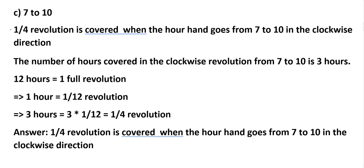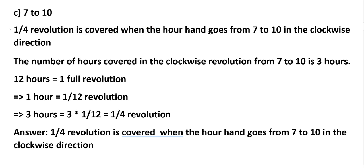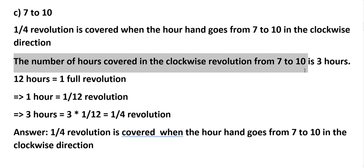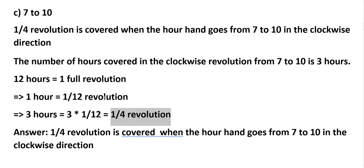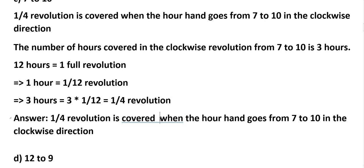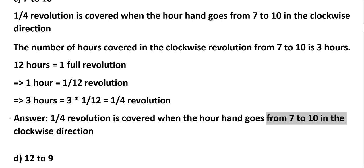C: 7 to 10. One-fourth revolution is covered when the hour hand goes from 7 to 10 in the clockwise direction. The number of hours covered from 7 to 10 is 3 hours. 12 hours equals 1 full revolution, 1 hour equals 1/12 revolution, 3 hours equals 3 × 1/12. 3 cancels with 12 four times, giving 1/4 revolution. Answer: 1/4 revolution covered when the hour hand goes from 7 to 10 clockwise.